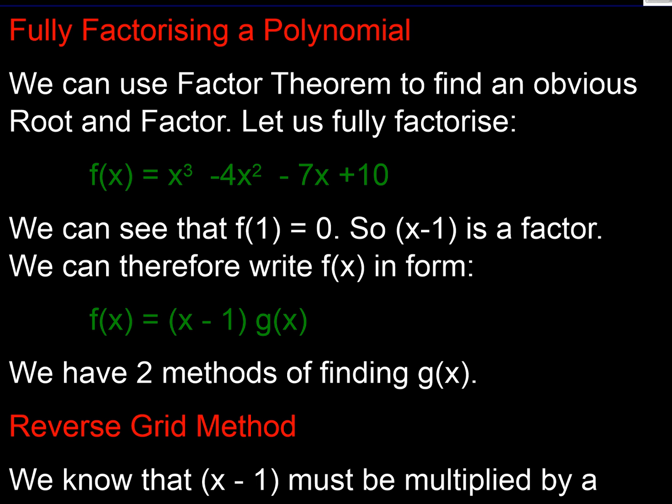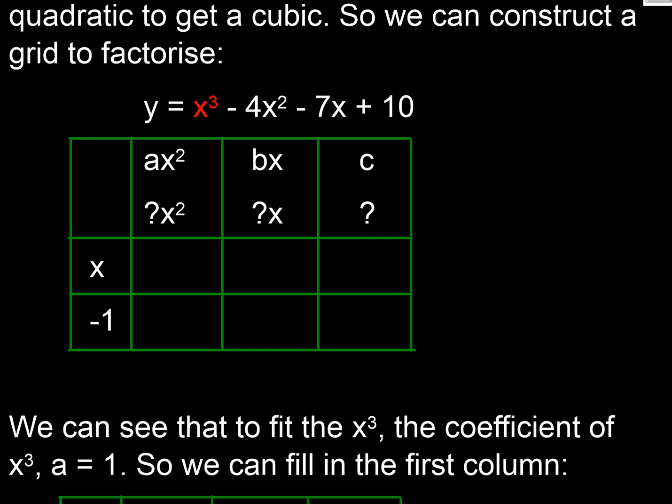So I'm going to use a slightly simpler example for us to do this with. I'm going to use a cubic. So here's my cubic expression, x cubed minus 4x squared minus 7x plus 10. And what I'm interested in is in factorising that. If I try x equals 1, I find that this expression is 0. So I've got 1 minus 4 minus 7 plus 10. So f of 1 is 0. So I know that x minus 1 is a factor. So I know that x minus 1 is a factor, and I want to find that g of x. And I'm going to use the grid method to do it, reverse grid.